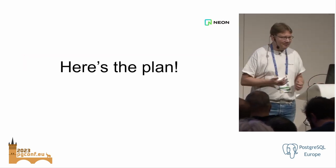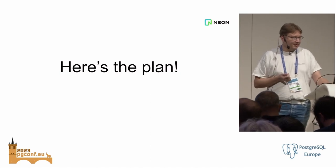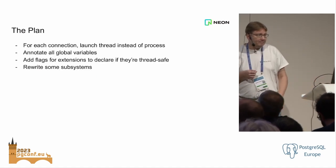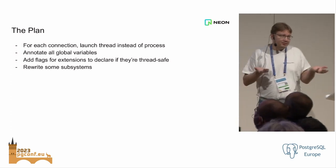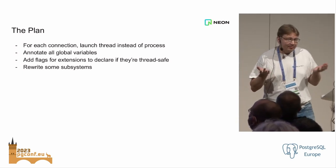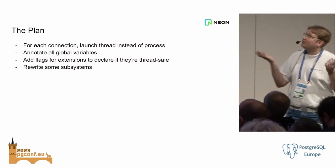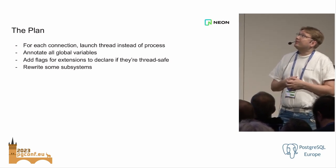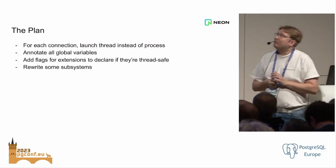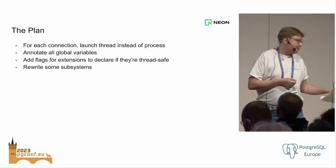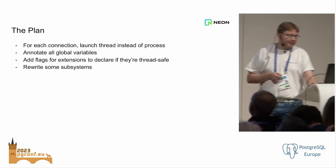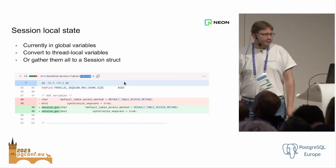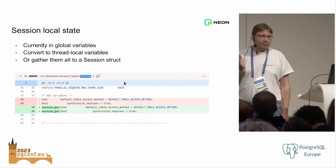So what is involved? What does it actually look like if we're going to make the switch? First of all, we need to launch threads instead of processes — instead of forking a process, you fork a thread. I mentioned the global variables many times; that's one of the things we will need to do. We have a lot of session-local state in Postgres.